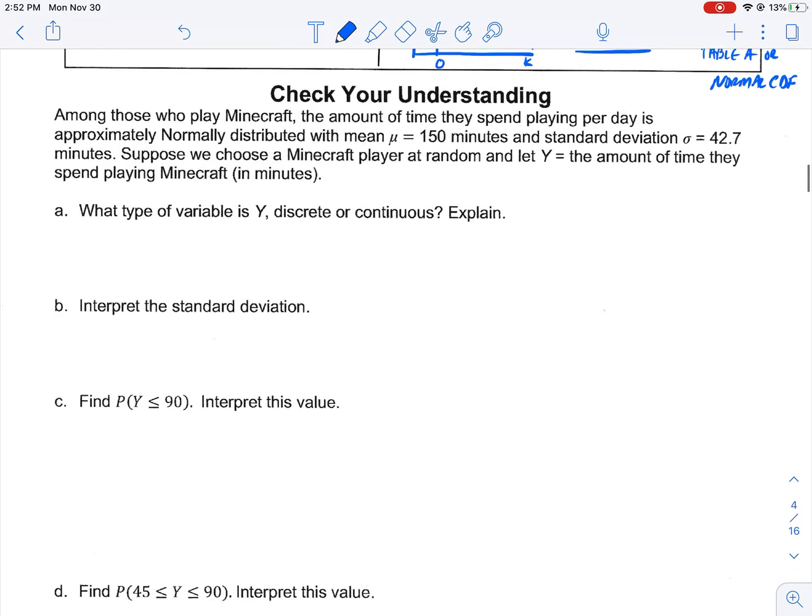Let's do a couple of examples. And I think you're going to find that you remember back to what we've done before using specifically that table A and our normal CDF. Here's the prompt. Among those who play Minecraft, the amount of time they spend playing per day is approximately normally distributed with a mean of 150 minutes and a standard deviation of 42.7 minutes. Suppose we choose a Minecraft player at random, let Y equal the amount of time they spend playing Minecraft in minutes.